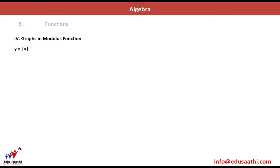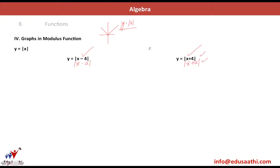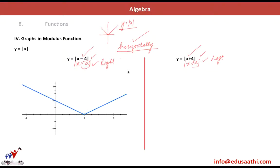The fourth type of transformation is on a modulus function. y = |x| is a graph you can draw easily. When you have a change inside the modulus sign — |x - a| or |x + a| — the graph shifts horizontally, similar to the quadratic case. If it is a minus sign inside, the graph shifts to the right; if it is a plus sign inside, the graph shifts to the left.